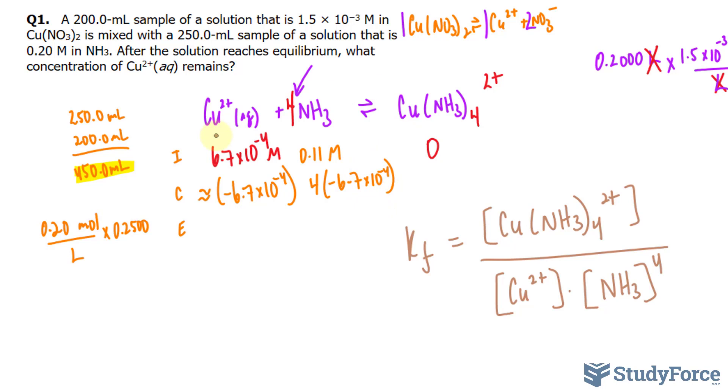And since it's moving to the right, where Cu(NH3)4 is being produced, we'll write down 6.7 times 10 to the power of negative 4, but it's positive because these are reactants and we're comparing it to the products, so it's always the negative. And the reason why we multiply this by 4 is because of that coefficient 4.